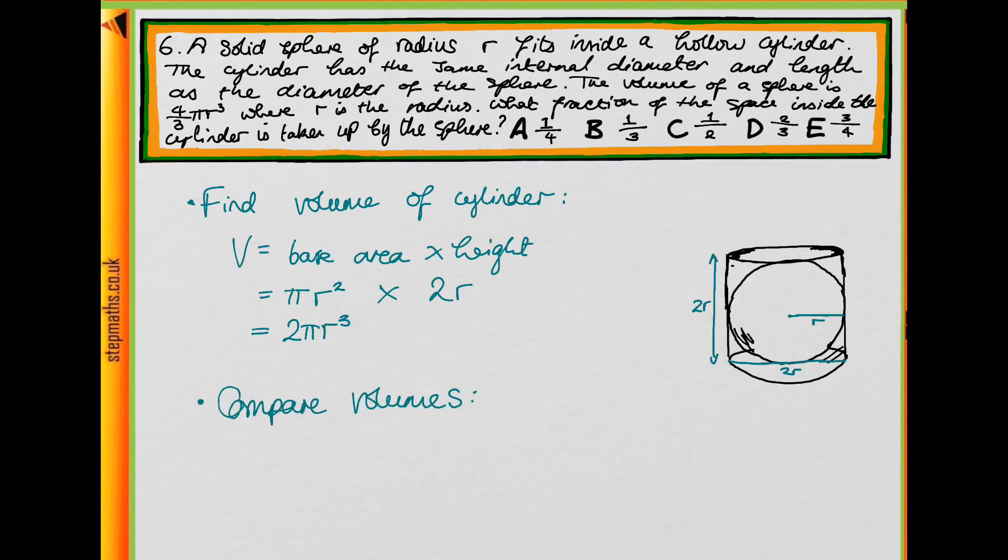The volume of the sphere divided by the volume of the cylinder will give us how much it takes up. So we need 4/3 πr³ divided by 2πr³. We can simplify this down to 2/3, so we get an answer of D.